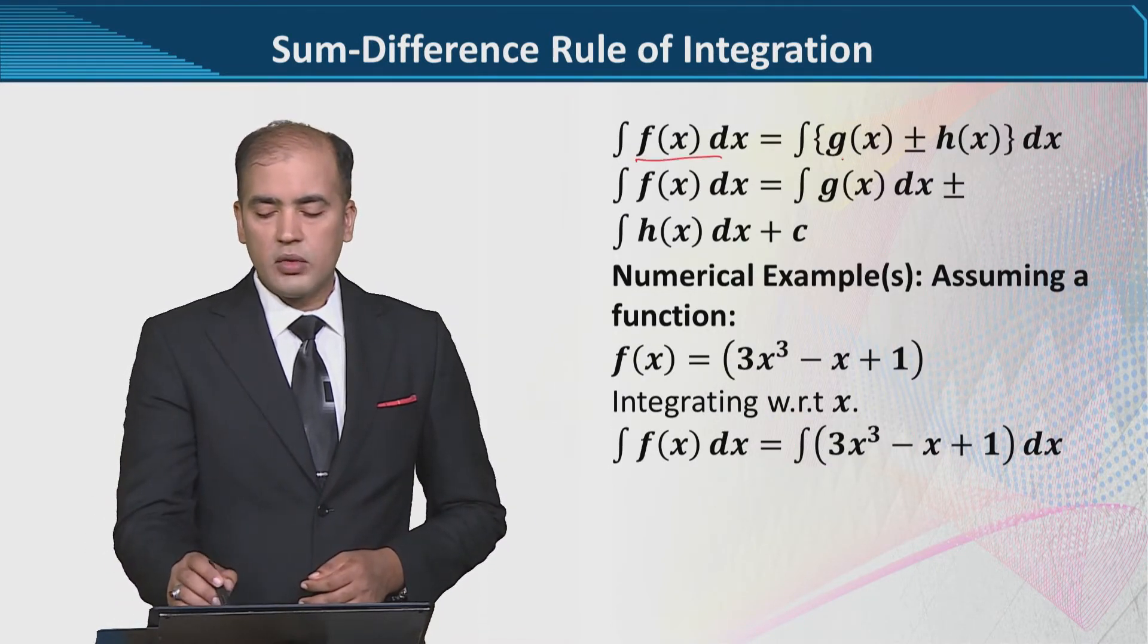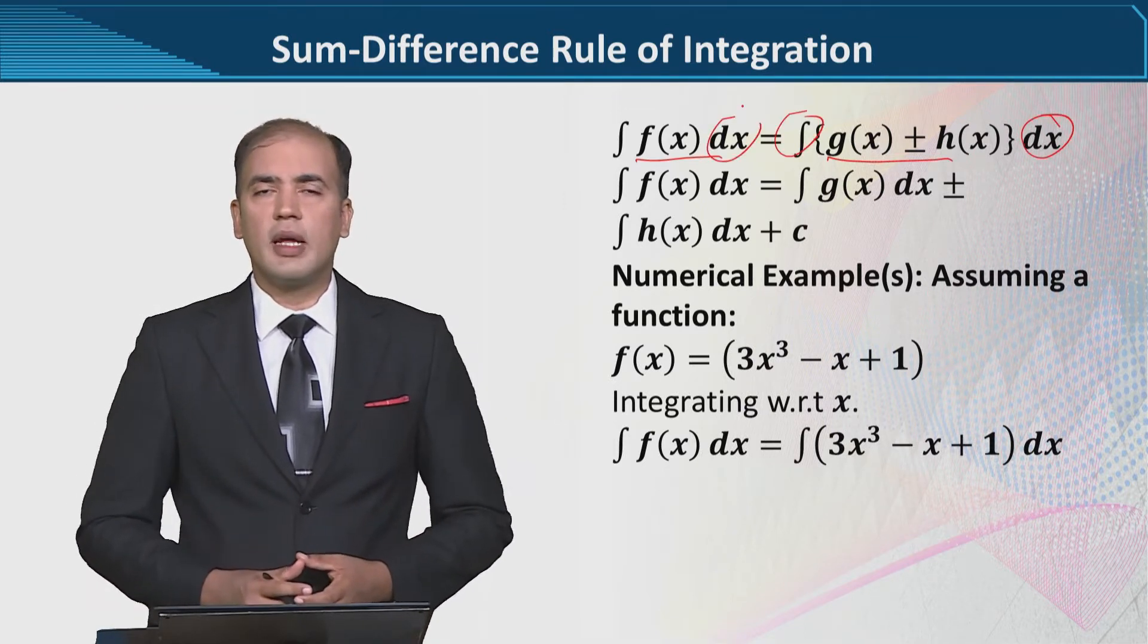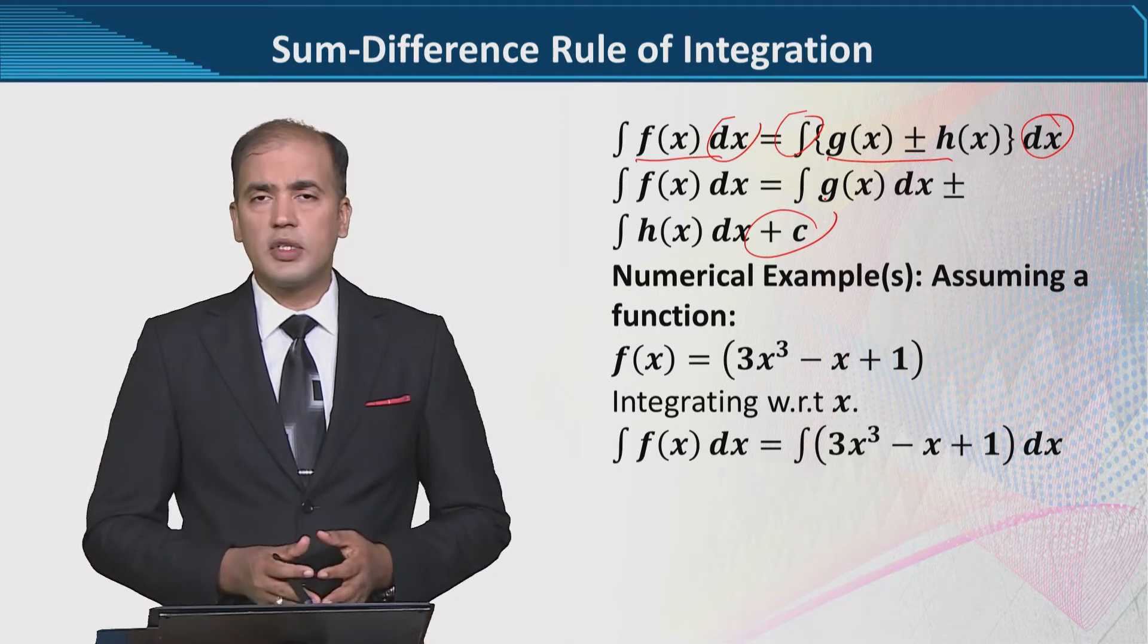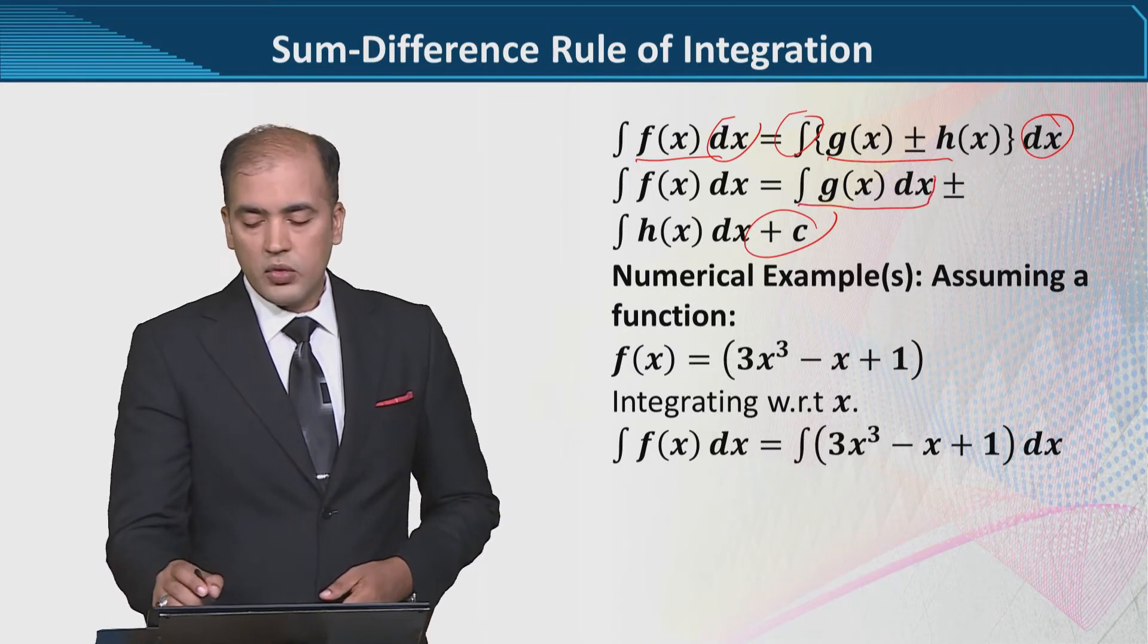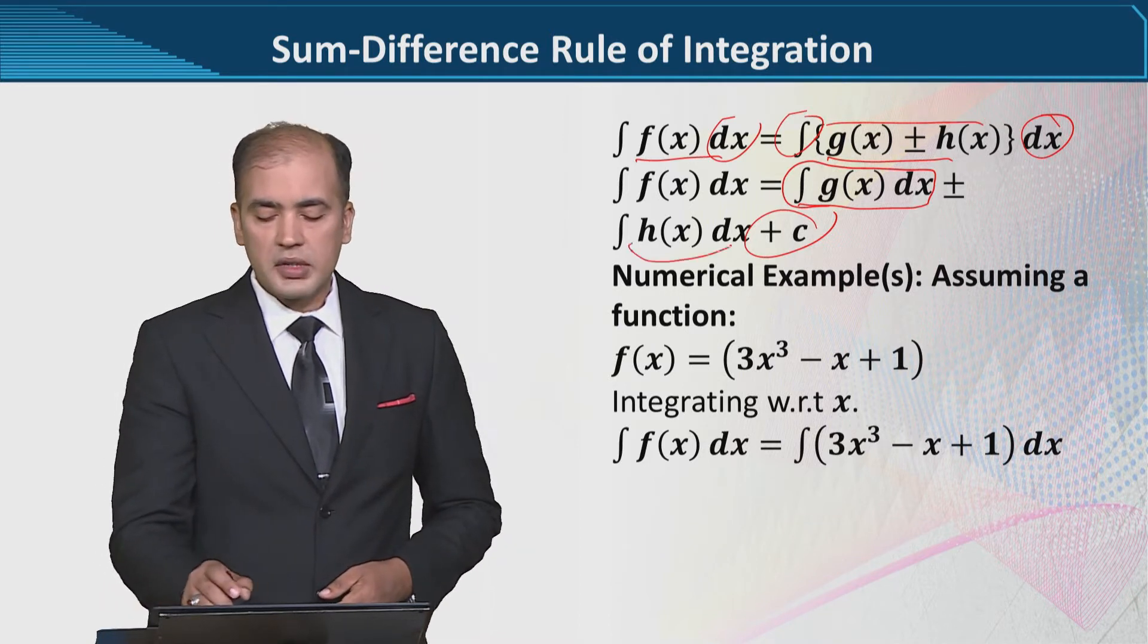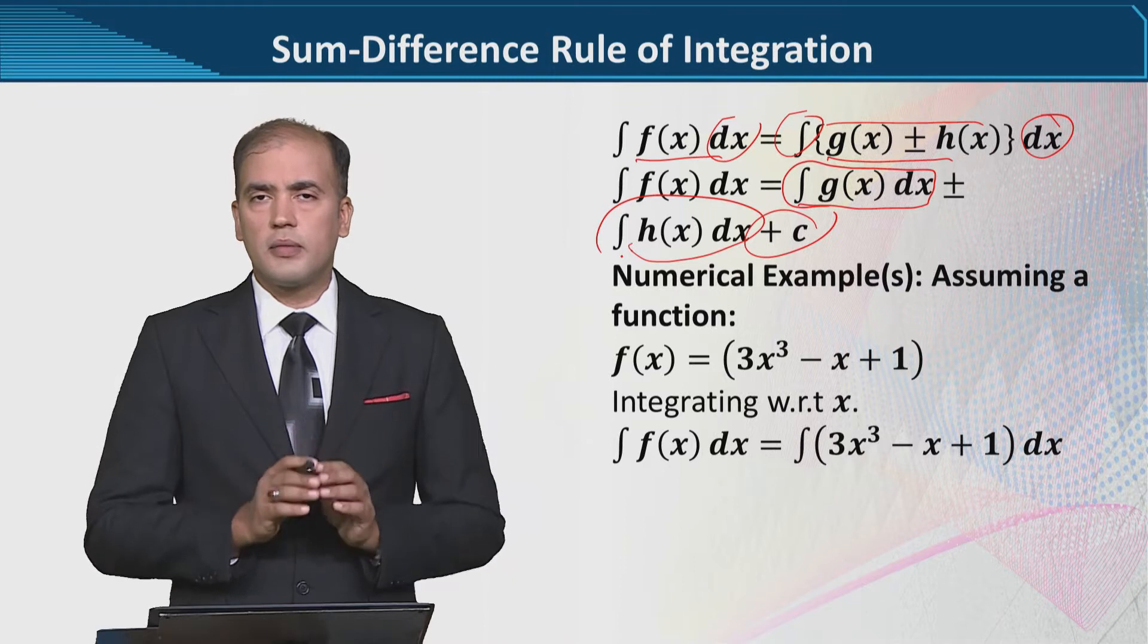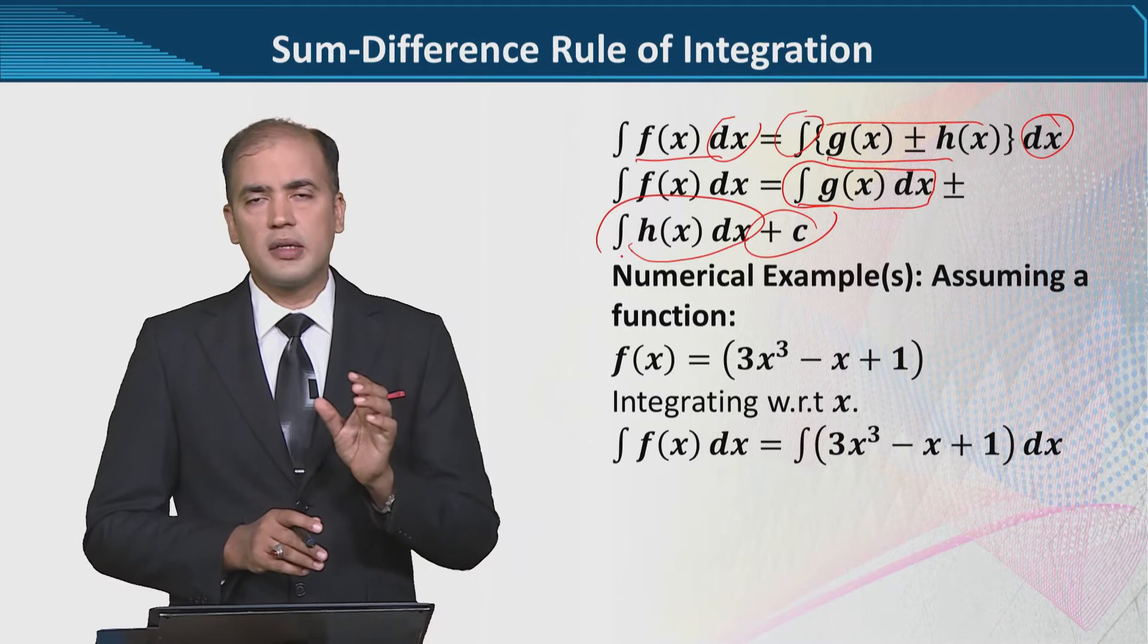Now, we have integrated this function on both sides with respect to x, because here the independent variable is x. Plus c will come because this is integration in which we introduce the constant of integration. However, the most important thing to note is that initially this was an overall integration, now we have introduced it separately on both functions. So this means that we have integrated both separately.